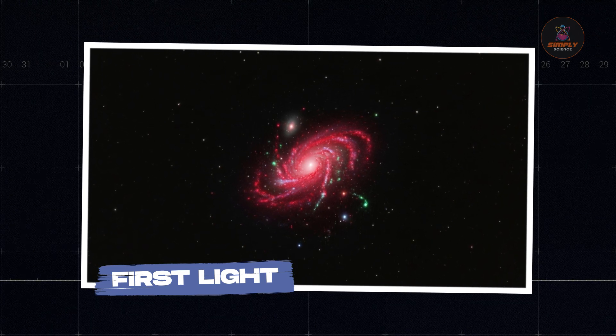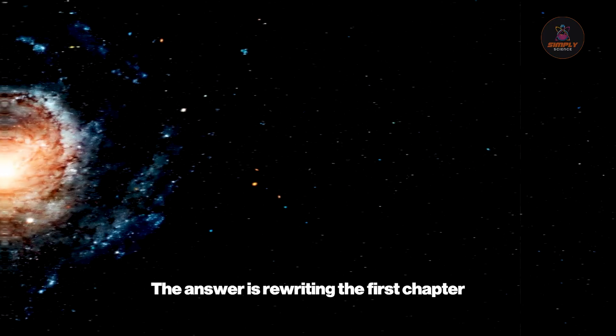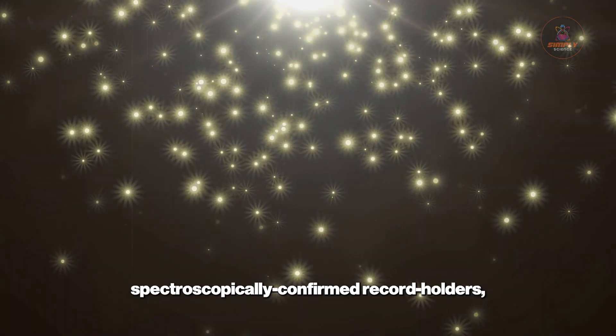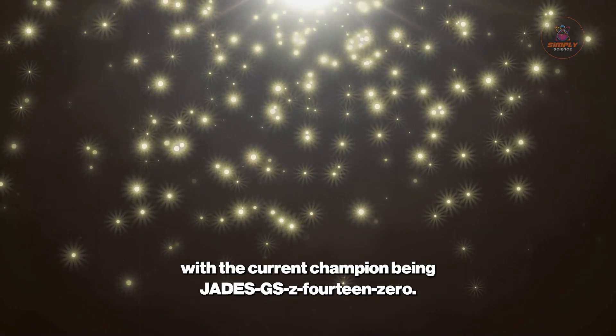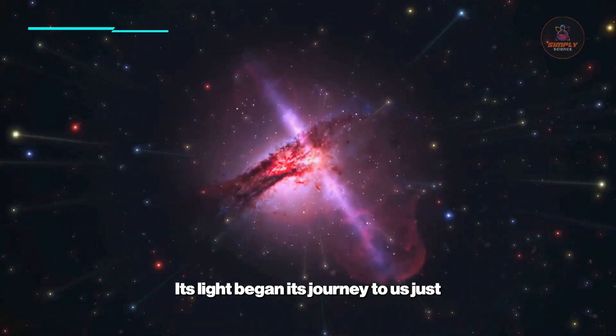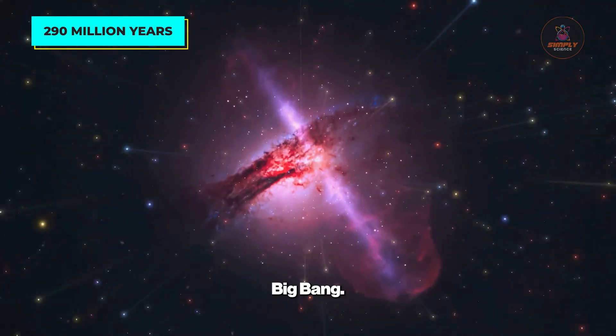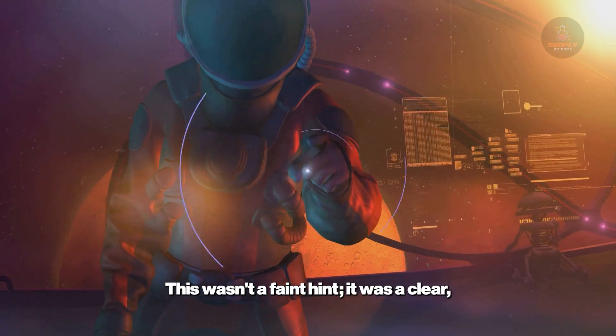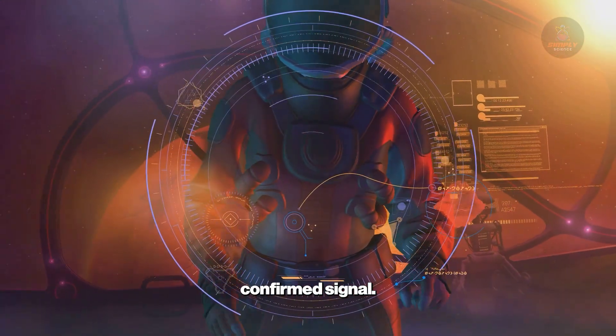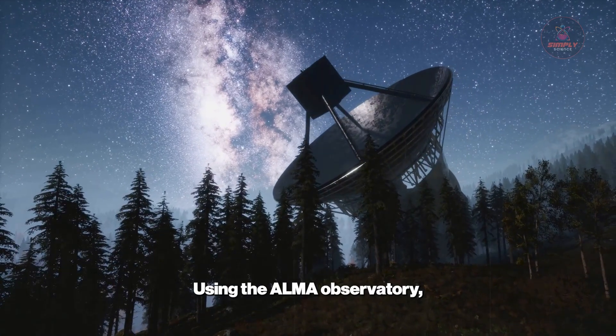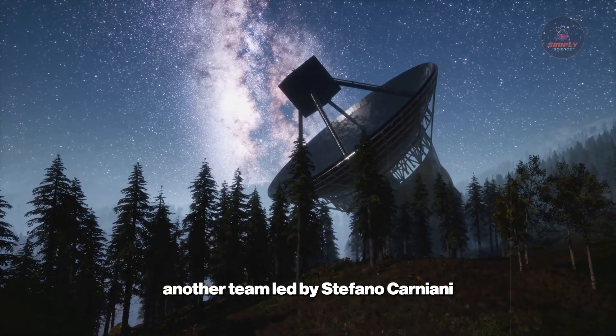First light. So just how far back can Webb see? The answer is rewriting the first chapter of the cosmic story. Webb has delivered spectroscopically confirmed record holders, with the current champion being JADES-GS-z14-0. Its light began its journey to us just 290 million years after the Big Bang. For the astronomers on the JADES team, like Kevin Hainline who first spotted it, the moment was electric. This wasn't a faint hint—it was a clear, confirmed signal.